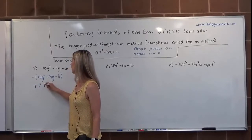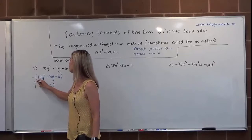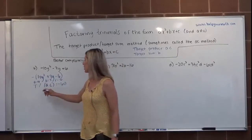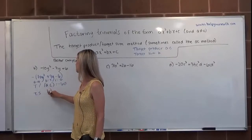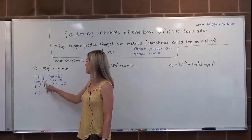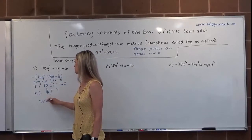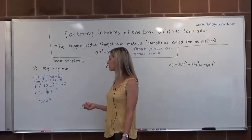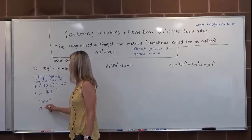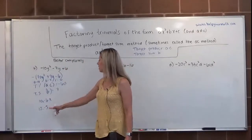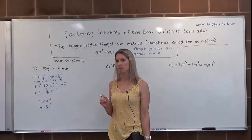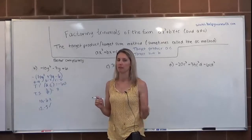Now the leading term is positive and the GCF of the three terms is 1. Identifying values: A is 10, B is 7, C is negative 6. Target product is A times C: 10 times negative 6 equals negative 60. Target sum is B: 7. Checking 10 and negative 6: doesn't work. Since the sum is positive, the bigger number should be positive. Trying 12 and negative 5: 12 times negative 5 equals negative 60, and 12 plus negative 5 equals 7. Winning combination found.